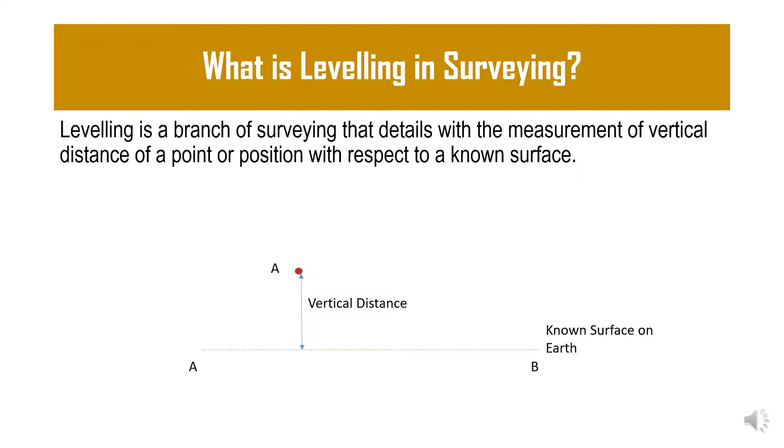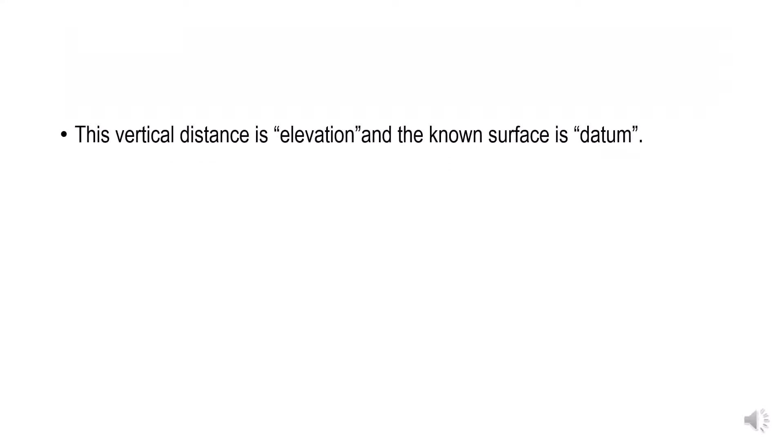The two important features of leveling are: understanding the known surface on Earth, and second is the vertical distance measurement. The vertical distance of a particular point is what we call elevation, and the known surface is what we call the datum.